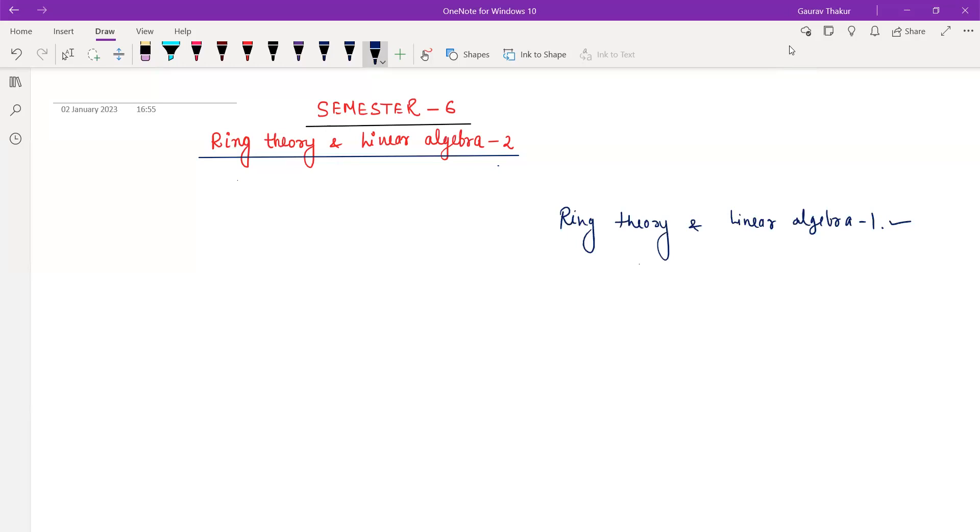So let's start the syllabus. We have in total 4 units. The first unit is polynomial rings and UFD, unique factorization domain. So as the name suggests, we are going to use Ring Theory first. So what do we need to know?